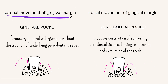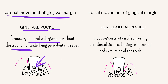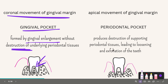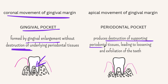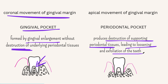When coronal movement of the gingival margin causes the pocket, it is called a gingival pocket rather than a periodontal pocket, because it is formed by gingival enlargement without destruction of the underlying periodontal tissues. The PDL and alveolar bone remain healthy. In contrast, a periodontal pocket involves apical migration of the gingival margin along with destruction of supporting periodontal tissues, evident bone loss, and PDL loss, leading to loosening and exfoliation of teeth.